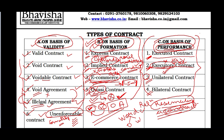Now the third and fourth points - unilateral contract and bilateral contract - these are nothing but a categorization, they are a sub-categorization and a type of executory contract itself. Both unilateral and bilateral contracts are types of executory contracts where parties still have work remaining.